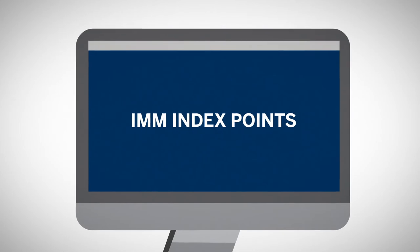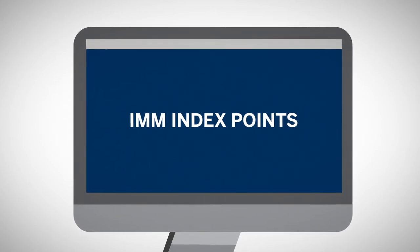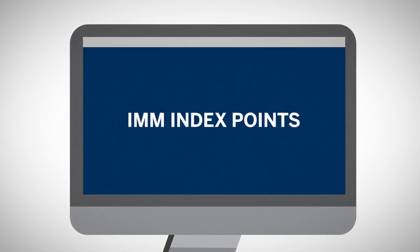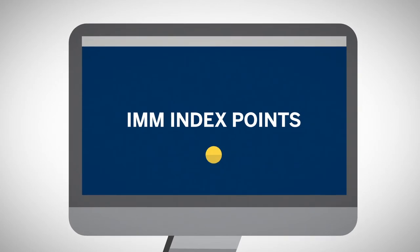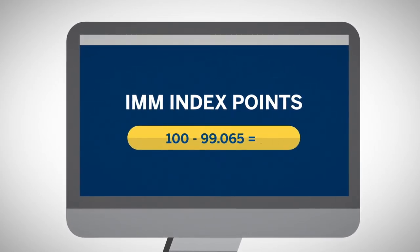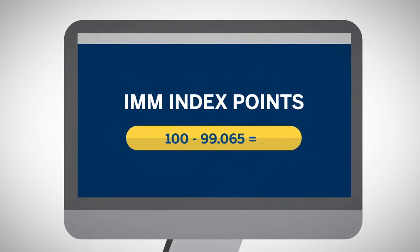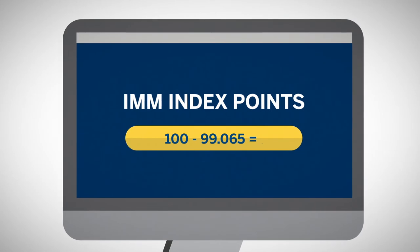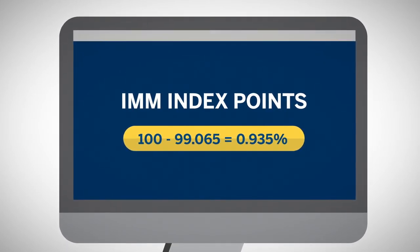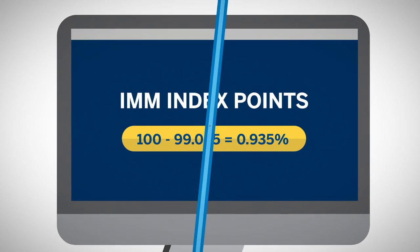The MPC SONIA Futures contract also trades in IMM index points. For example, a quoted price on a December 2018 MPC SONIA Futures contract at 99.065 equates to a 0.935% yield in equivalent SONIA rate.